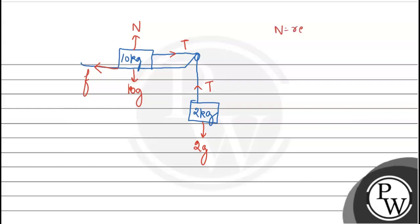N is the reaction force and equals 10g. The friction formula is μN, where μ is the coefficient of friction. So friction is μ × 10g.